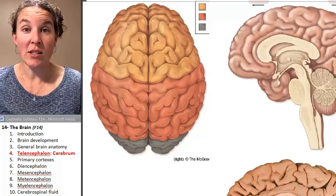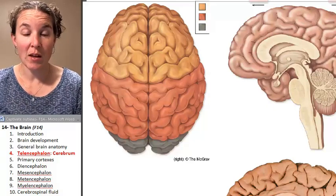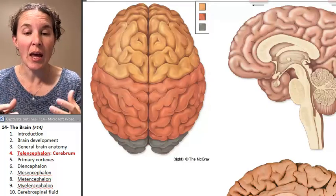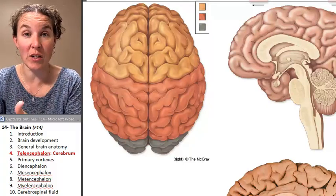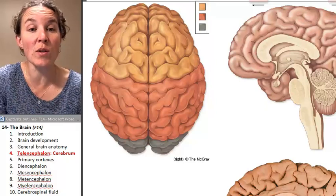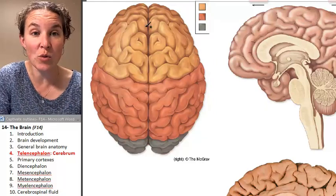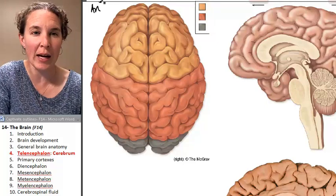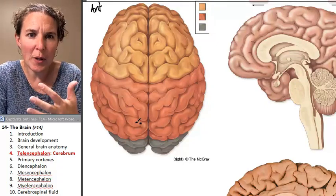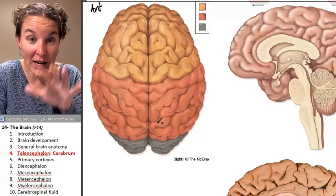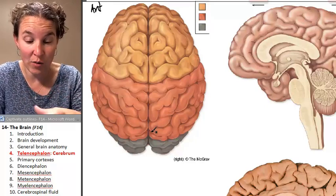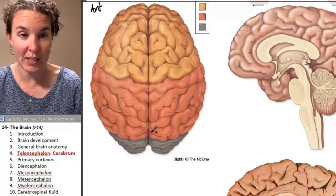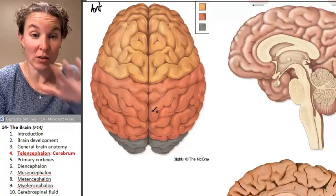The telencephalon gives rise to the cerebrum. The cerebrum is the wiggly part of your brain that you can see, and there are two hemispheres. In this visual, this is anterior. If you're looking down at the brain, this is the superior surface that we can actually see. It's like you cut somebody's skull and opened it up and looked in.